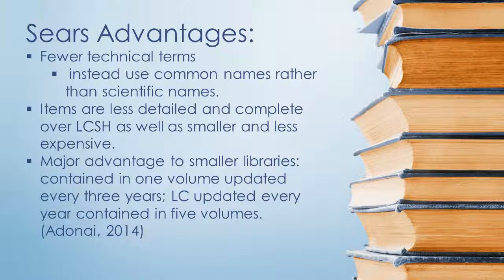The advantages were obvious. By allowing for a more flexible system with fewer terms, and by using common names rather than scientific names, it makes for less detail and builds an overall complete list that is smaller and less expensive than the Library of Congress subject headings. This advantage for smaller libraries is that one volume is updated every three years, while the Library of Congress is updated every year and is contained within four volumes.